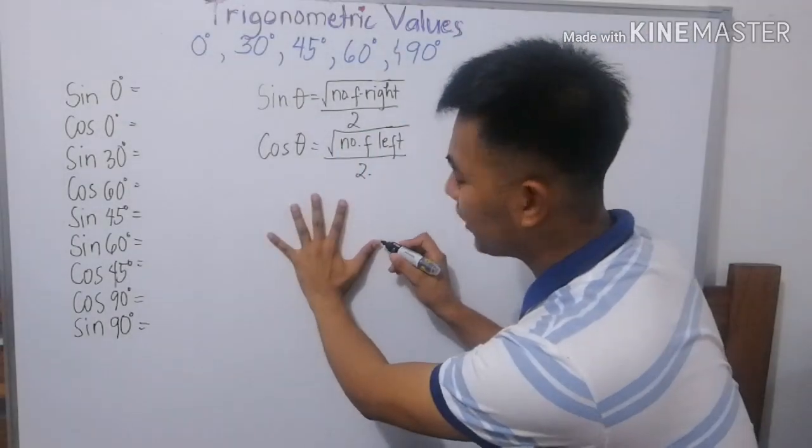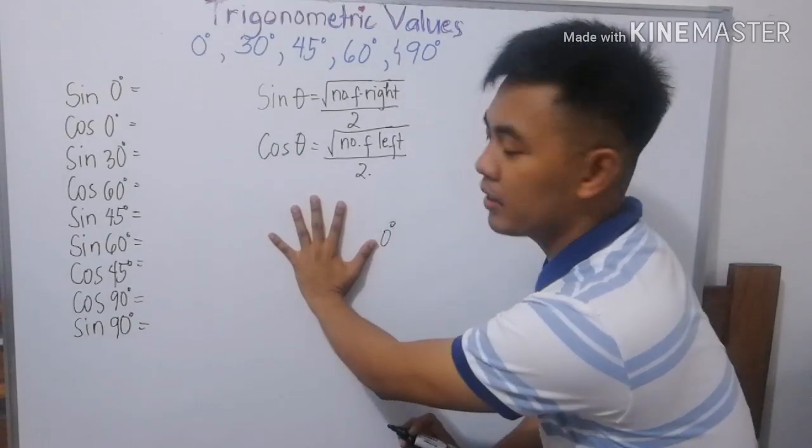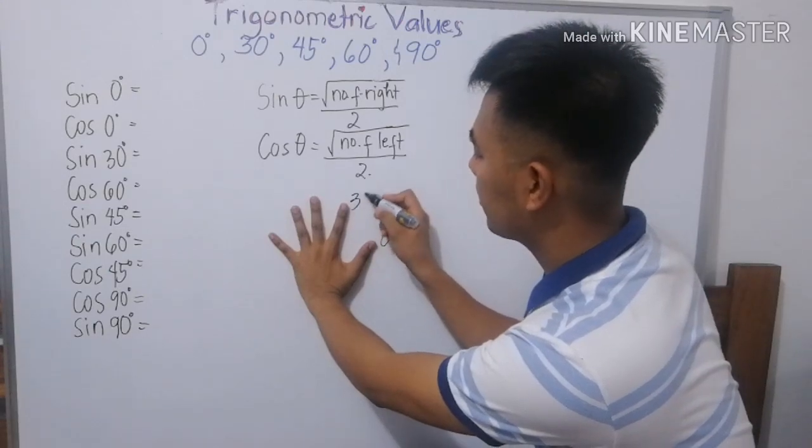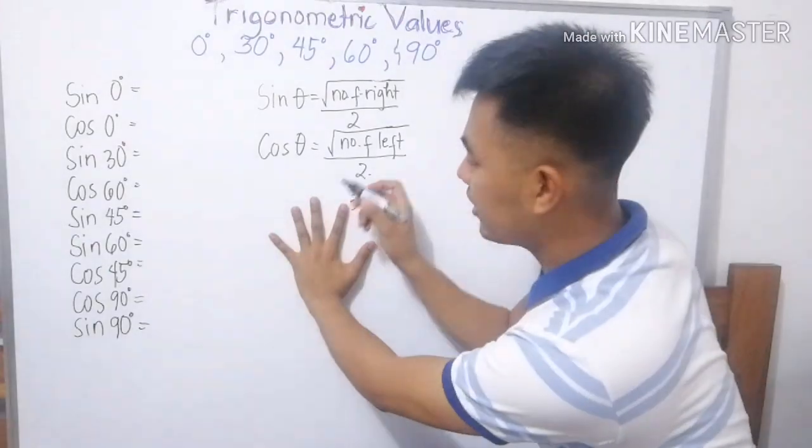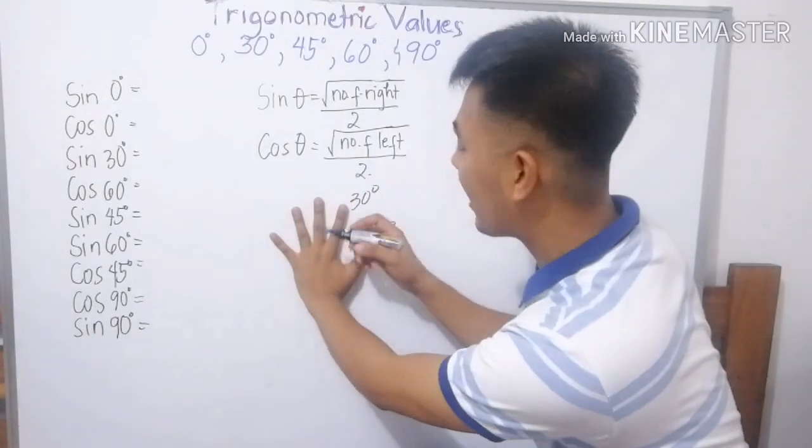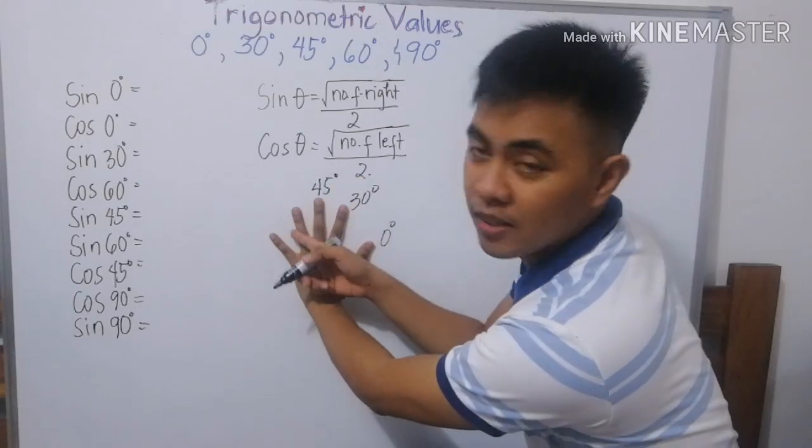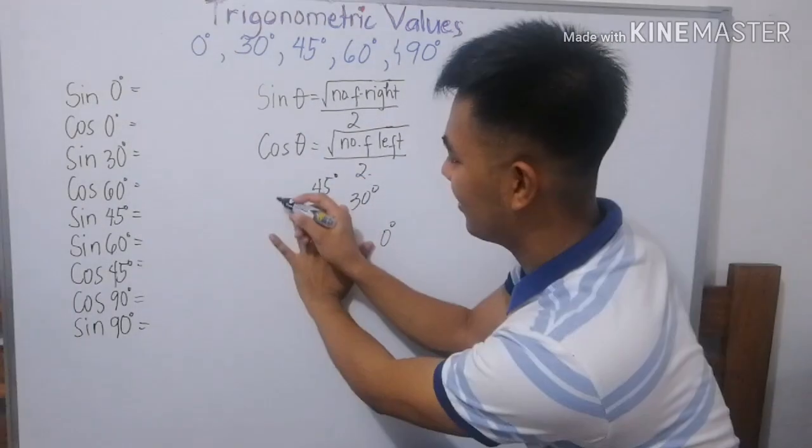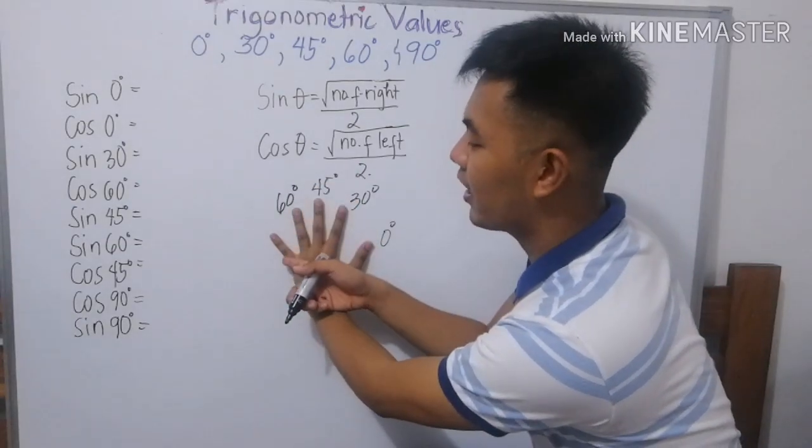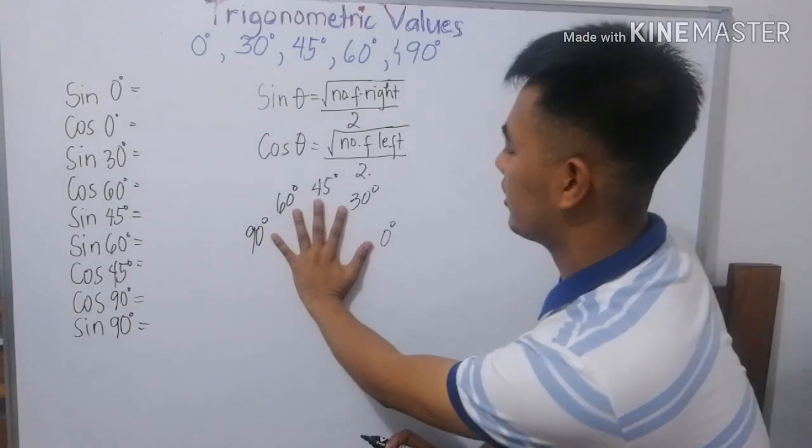So, itong hinlalaki, dito ang magiging 0 degrees. Hintuturo, 30 degrees. In lalaki, palagitnaan, 45 degrees. At singsingan, 60 degrees. At singsingliliit, yung 90 degrees.